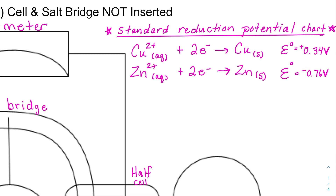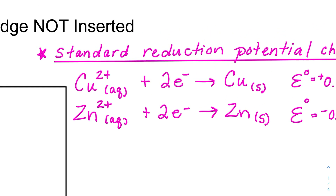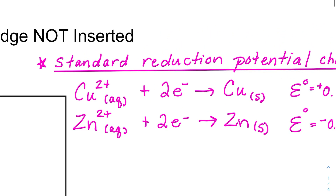Standard states — indicated by the naught sign — means 1 ATM, 298 Kelvin, and, importantly, 1 molar concentration. We're going to use that when setting up this galvanic cell.